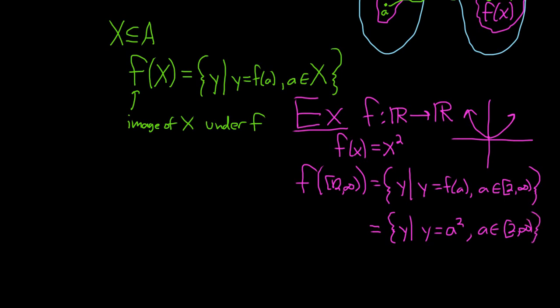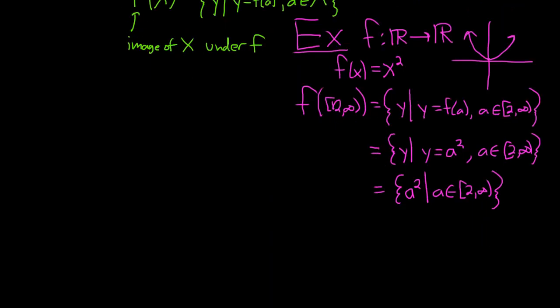We can condense this. We're saying y is such that y equals a squared. We can just say a squared such that a is in the set 2 to infinity. So if you think about this, the smallest it can be is when a is 2. So it's going to be 4 and on. This should just be 4 to infinity, because if a is 2, that's the smallest it can be. You'll get 4, because 2 squared equals 4.